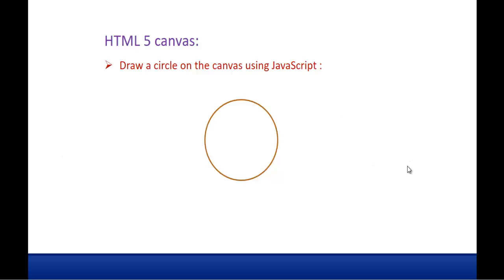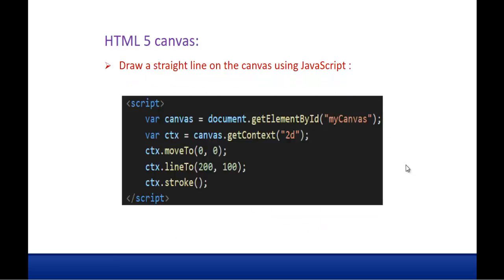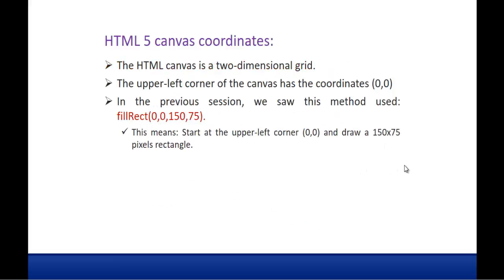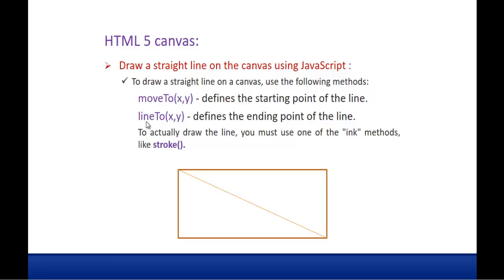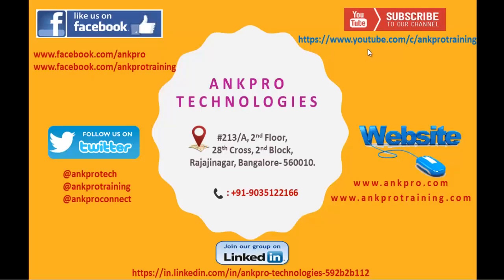I hope you understood how to draw a straight line on the canvas using JavaScript and also how to draw a circle on the canvas using JavaScript. We also learned how to find the coordinates using the event object — it has two properties, clientX and clientY, which return the coordinates. Thank you for listening. Have a great day. Please subscribe to our YouTube channel. You can also like our Facebook page, follow us on Twitter, and we are on LinkedIn too.